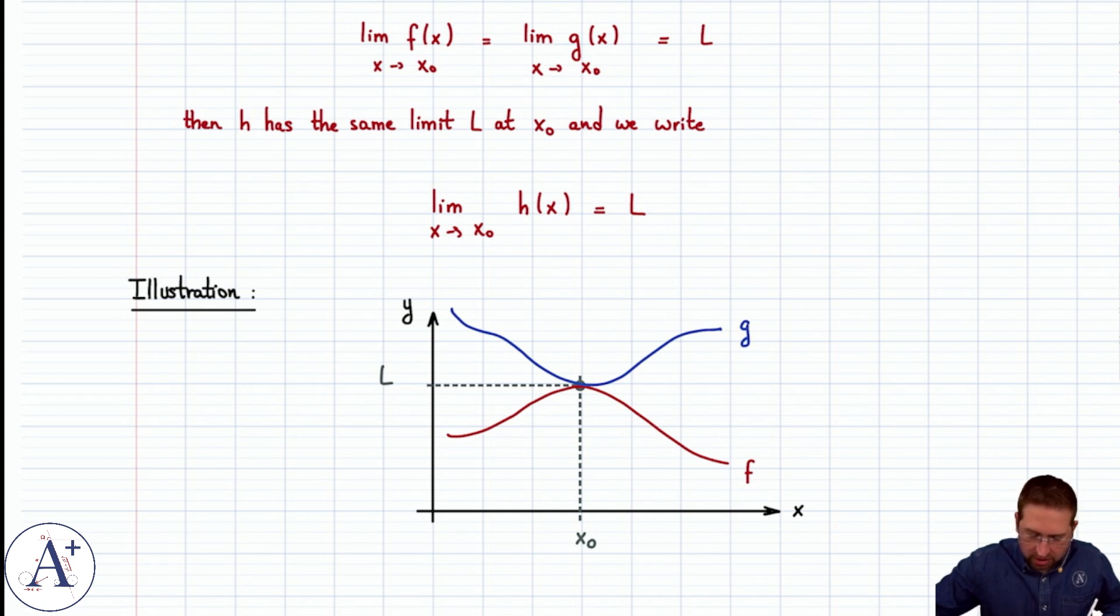Then the function h that lives in between f and g has no choice. At x-naught, it has to squeeze through that point and have a limit L. So h might look something like this, where it is always in between f and g, but at x-naught it has to have a limit of L.